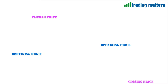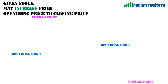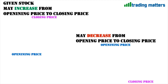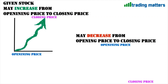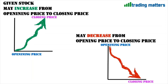So now we know that a stock during a trading session opens with an opening price and closes at closing price. There are two cases: case one, the given stock may increase from opening price to closing price; or case two, it may decrease from opening price to closing price. In case one, the stock opened at 100 and moved all the way up to 150 and closed.